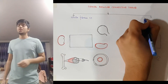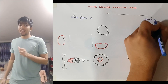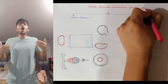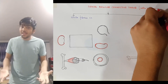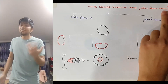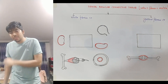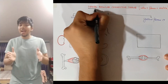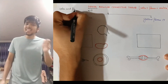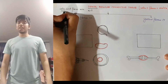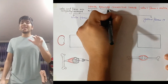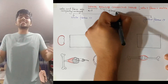Dense regular connective tissue is a type of proper connective tissue — meaning it contains all the typical features a connective tissue is supposed to have: it contains cells, fibers, and a matrix on which these cells and fibers lie. The word 'dense' means the cells and fibers are compactly arranged, and 'regular' means the compactly arranged fibers are organized in a regular fashion and not just scattered everywhere.